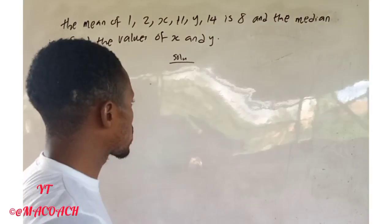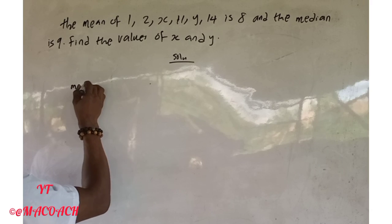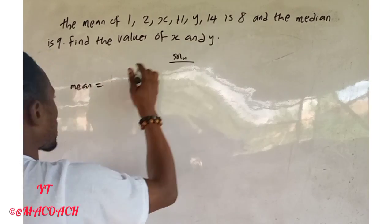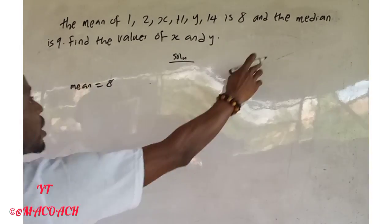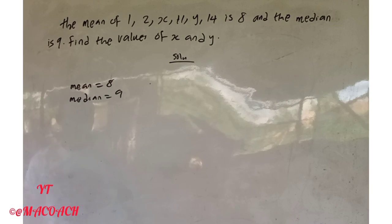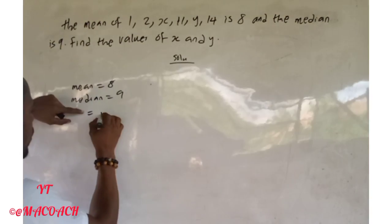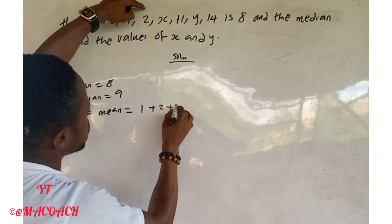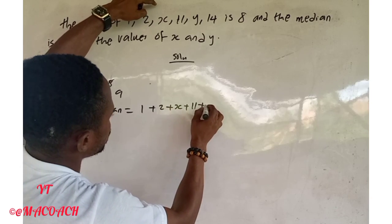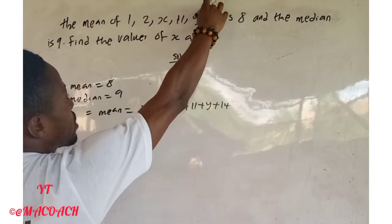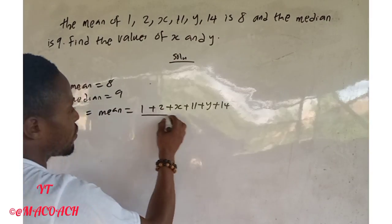Let's find the mean first. The mean is equal to eight. We have the numbers: 1 + 2 + s + 11 + y + 14. How many numbers do we have? One, two, three, four, five, six — that is six numbers, so we divide by six.